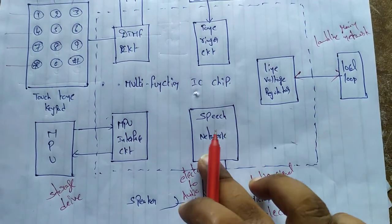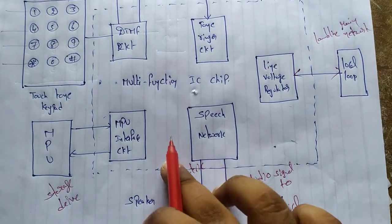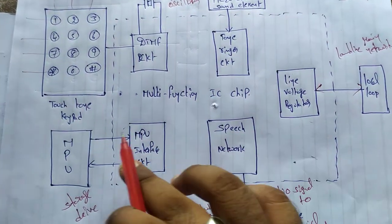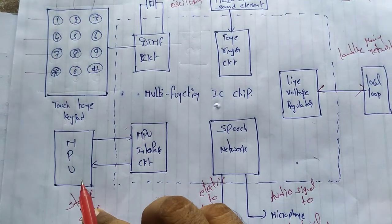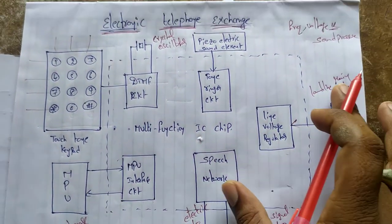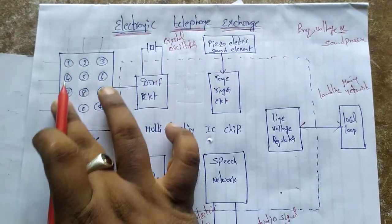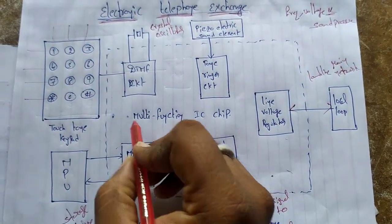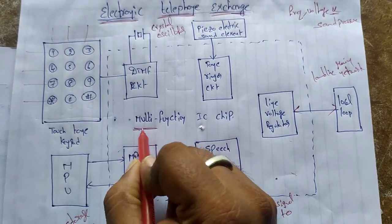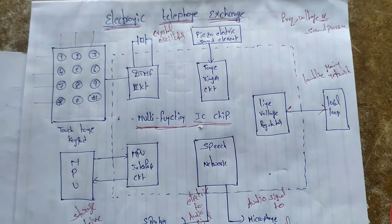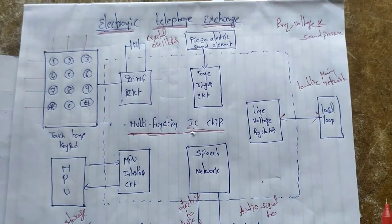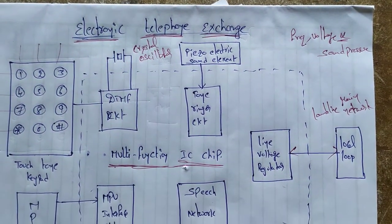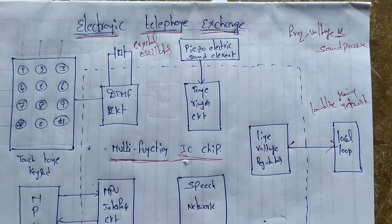You can store the microphone, audio, and the whole data store. You can store the MPU circuit. This complete circuit is a small chip design. It is called a Multi-function IC.